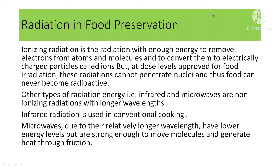Let's now talk about radiation and food preservation. Radiation may be defined as the emission and propagation of energy through space or a medium. Radiations of wavelength less than 200 nanometers, such as UV, X-rays, and gamma rays, are all called ionizing rays and are of great importance in food preservation. Ionizing radiation is defined as radiation with enough energy to remove electrons from atoms and molecules, converting them to electrically charged particles called ions.